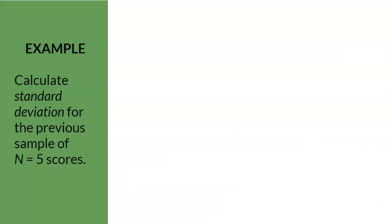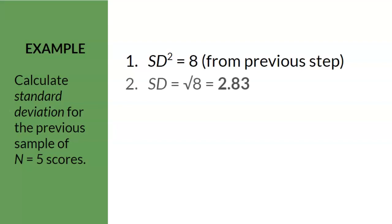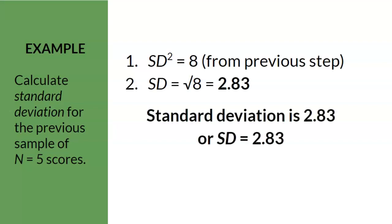Now we're not done yet. The example continues by asking us to calculate standard deviation for the previous sample. Step 1 is to calculate variance, which we already did in the previous step. Step 2 is to square root the variance. The square root of 8 equals 2.83. In other words, SD equals 2.83.